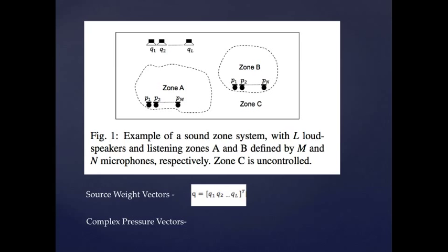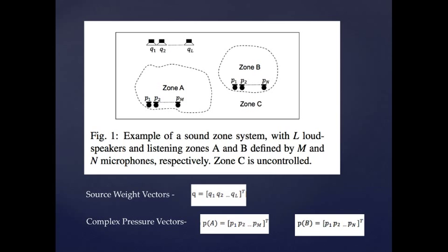Microphone arrays are placed within both zones to generate the complex pressure values for each zone independently. The transfer function representations of the pressure values in each bright zone are represented by these equations.